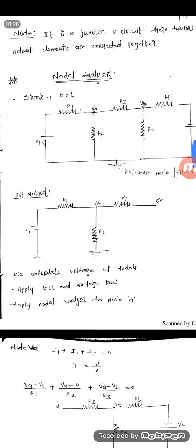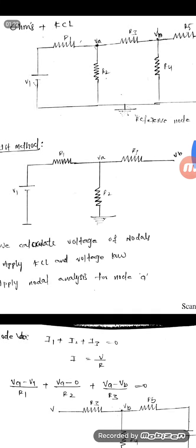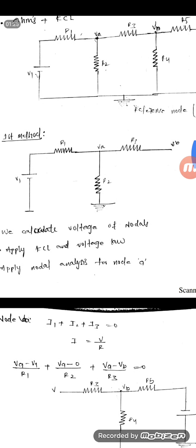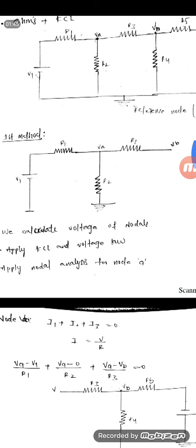The first step is applying the nodal analysis for node A. You have to redraw the circuit with reference to node A only — showing how many elements are connected to node A. Then only you can solve it very simply.